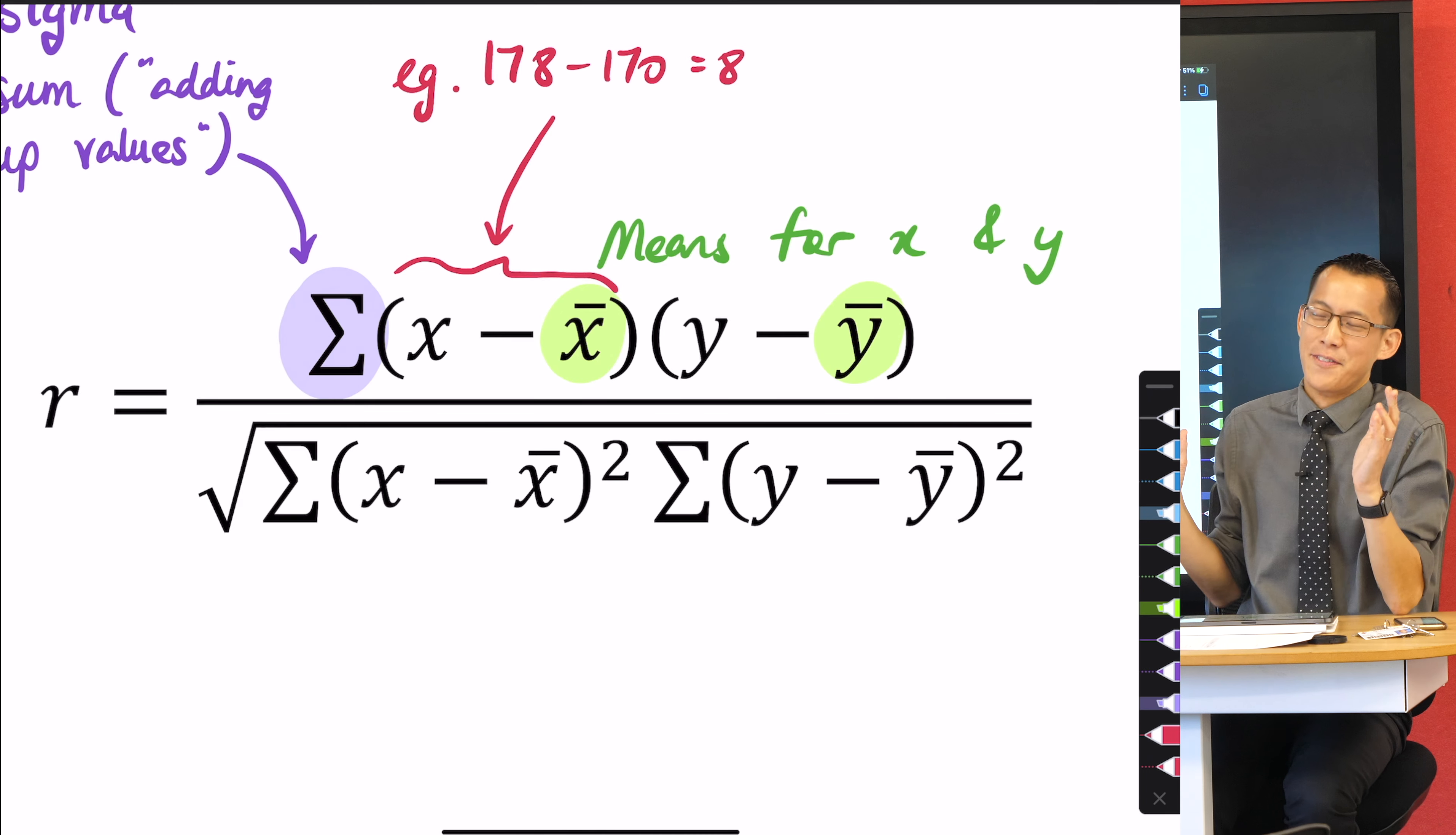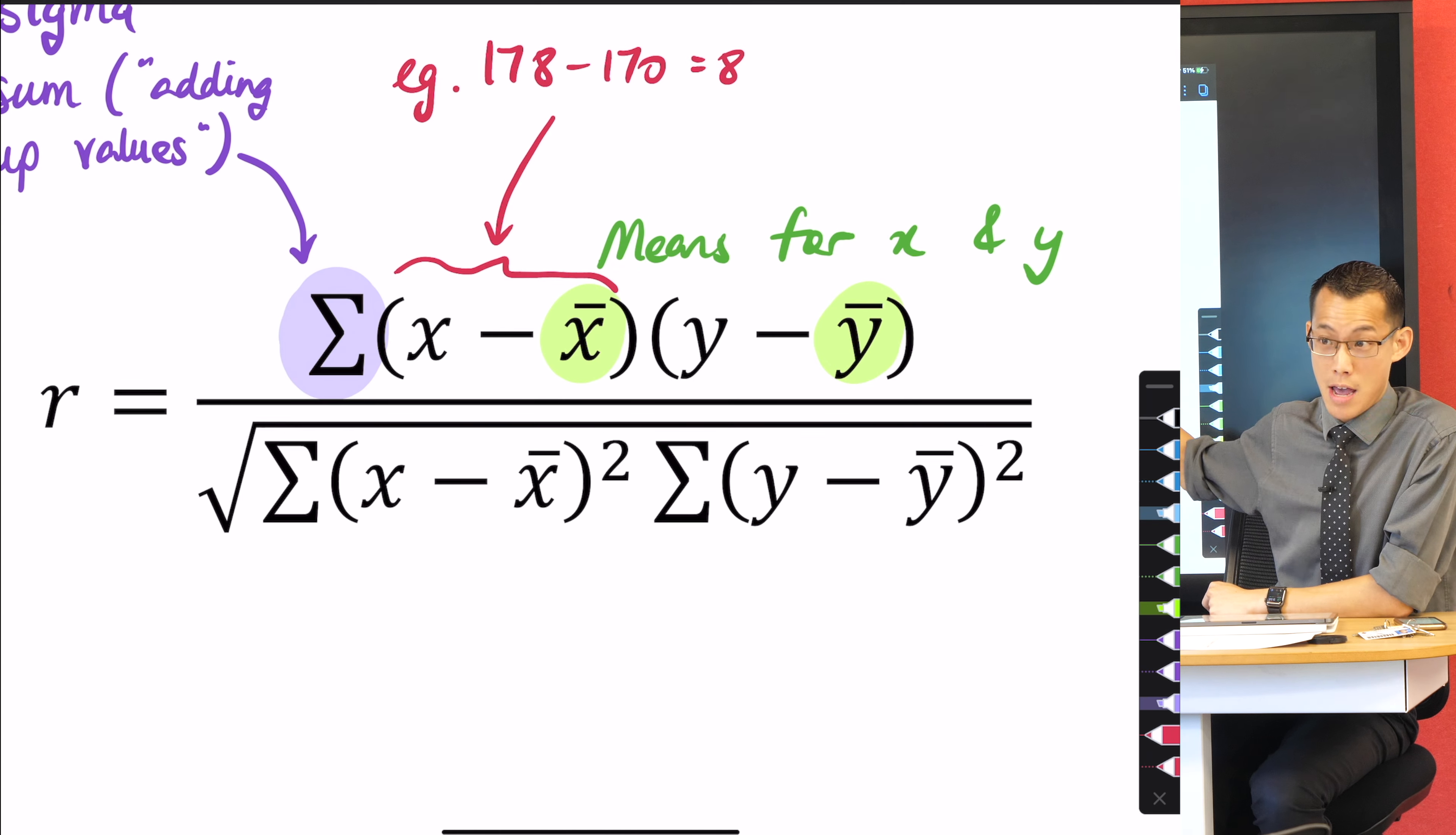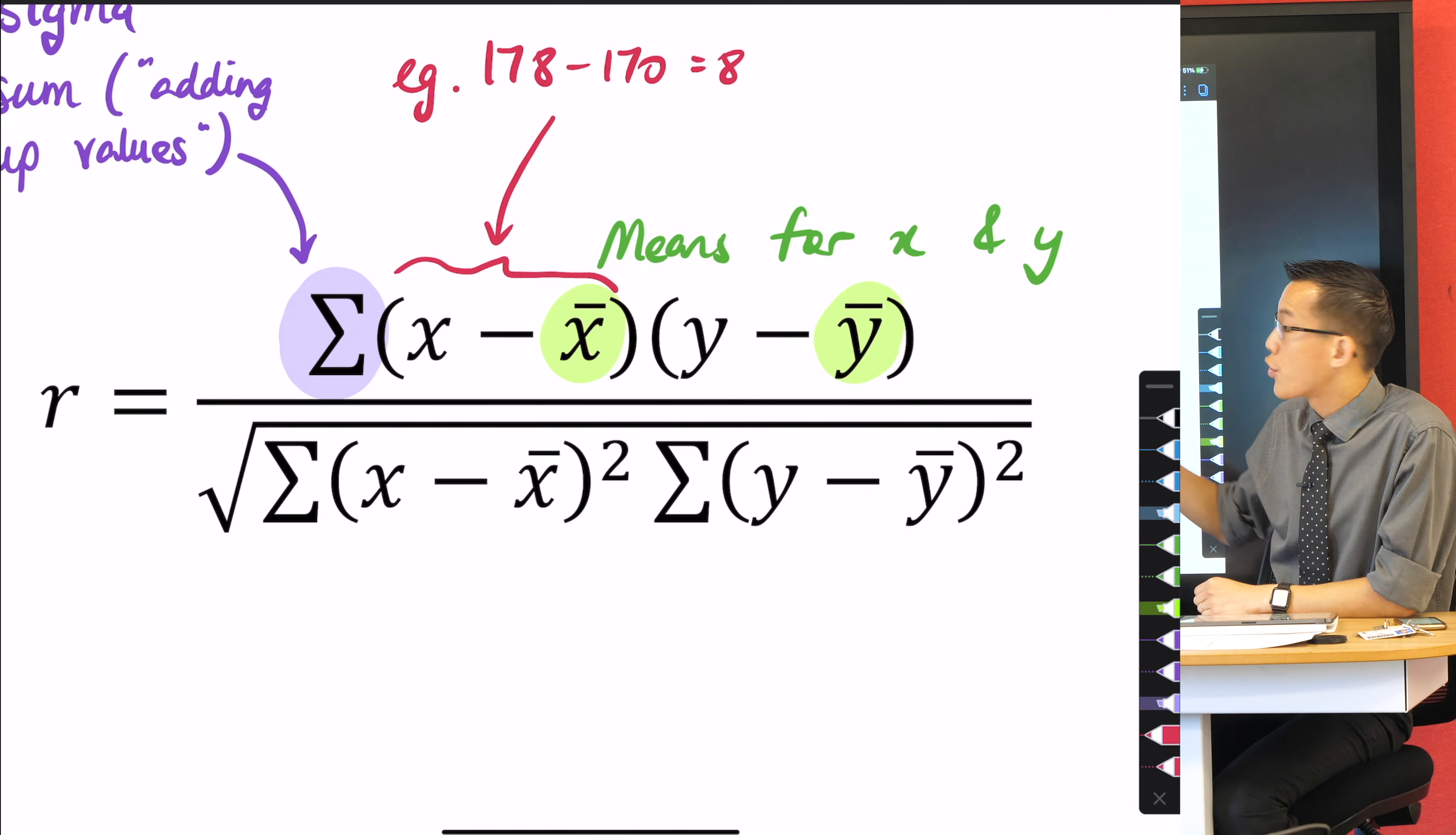And of course, if you are less than 170, if you're say 164, you're going to get a negative value. So that tells you you're below average and how much.